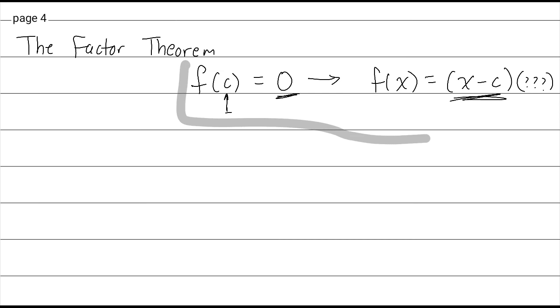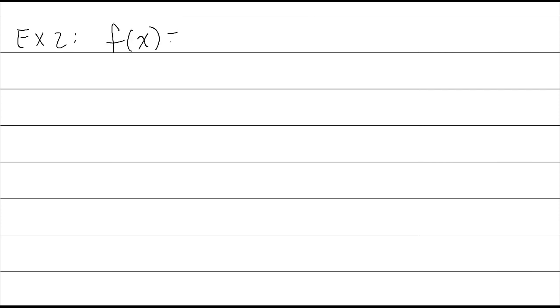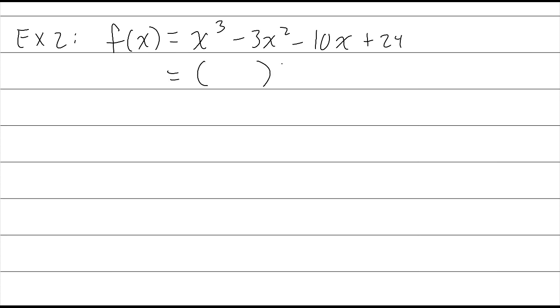Let's do an example. We want to factor the polynomial f(x) = x cubed minus 3x squared minus 10x plus 24, using a combination of the remainder theorem and the factor theorem. I'm going to look for zeros that I can plug in, using the remainder theorem in addition to the factor theorem.